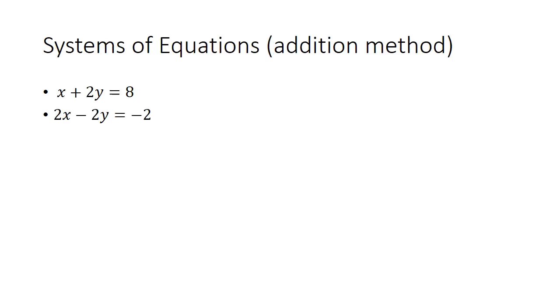Systems of equations is the last thing we study in this class. And I'd like you to use the addition method on something like this, which means you will add the two x terms together vertically. You'll add the two y terms together. Notice that they're going to drop out. And you're going to add the two constant terms together. If you do that, you get this. Notice the y is dropped out. 3x equals 6. So x is 2.